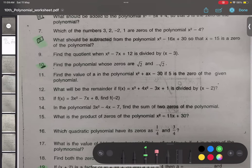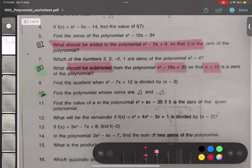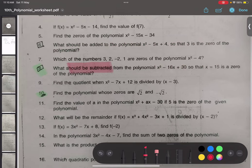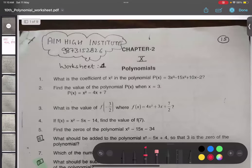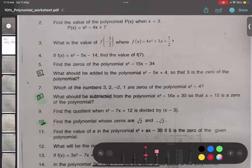So in question number 8, what should be subtracted from the polynomial x² - 16x + 30 so that x equals 15 is a zero of the polynomial? Can you see it's similar? Little bit different language, but whenever they're asking what should be added or subtracted, the idea is: use remainder theorem, find out the remainder. If it is subtracted, just subtract the remainder. If it is added, additive inverse of the remainder should be added. So I'm not going to do question number 8. You can do it on your own.